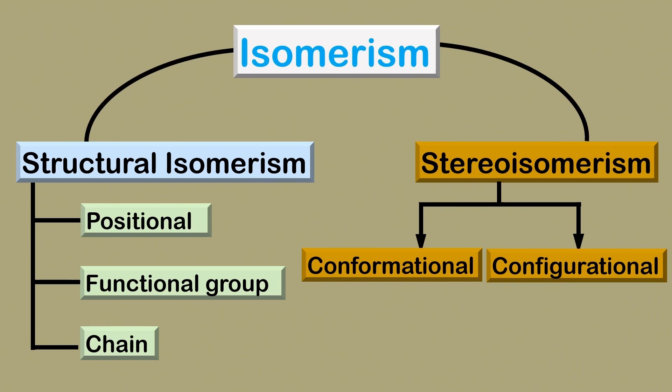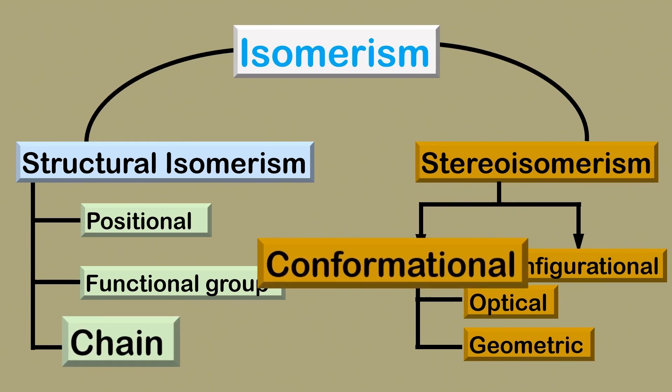Conformational isomerism is further subdivided into optical and geometric. For the case of this video, we shall be looking at mainly chain and conformational isomerism, specifically in alkanes.